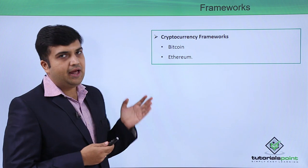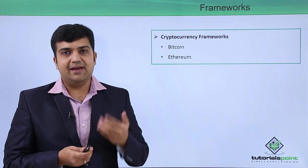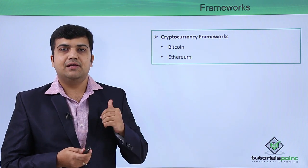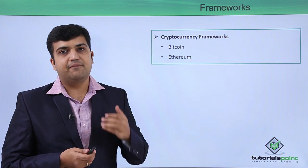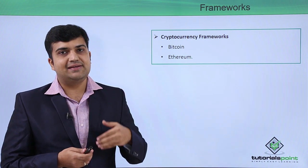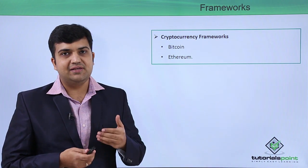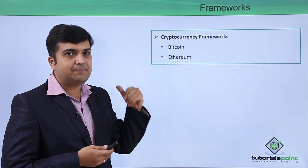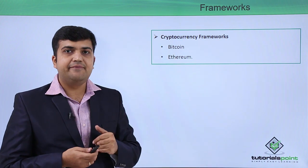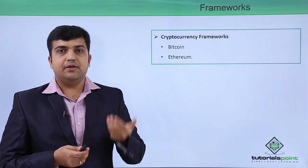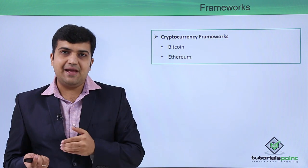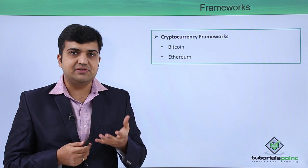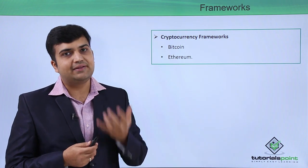Bitcoin and Ethereum are two of the most well-known cryptocurrency networks. They are the public cryptographic blockchain network and one with a proper ID can send and receive money using Bitcoins and Ethereum. Both of them have their own API as well. You can create third-party applications for sending and receiving Bitcoins by using wallet applications with the APIs of Bitcoin and Ethereum.